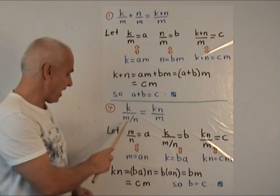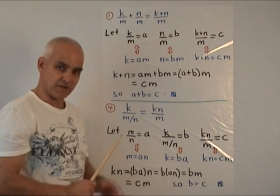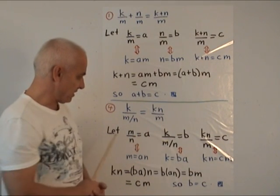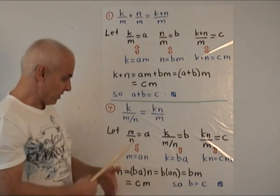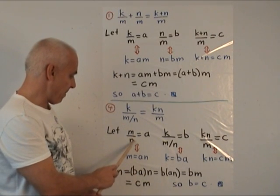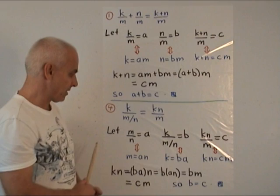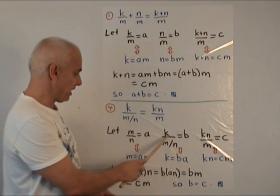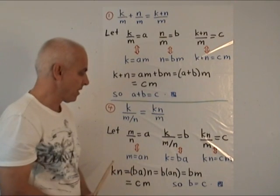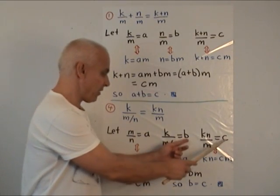For the fourth law, k divided by m divided by n, which is a little bit strange, is equal to k times n divided by m. We do something similar. We introduce some notation. We let m divided by n, which is the denominator here, be a. We let this entire expression be b. And this expression be c. So what we want to prove is that b equals c.